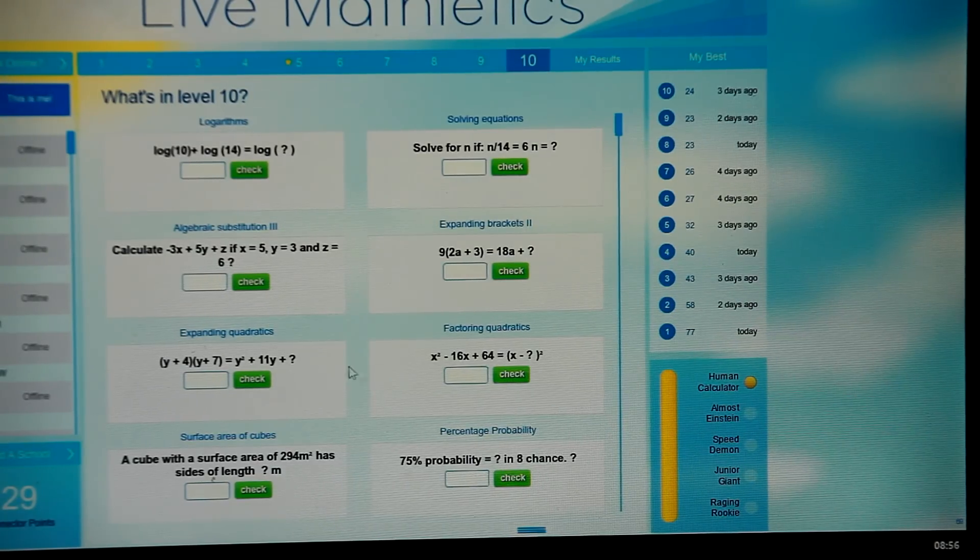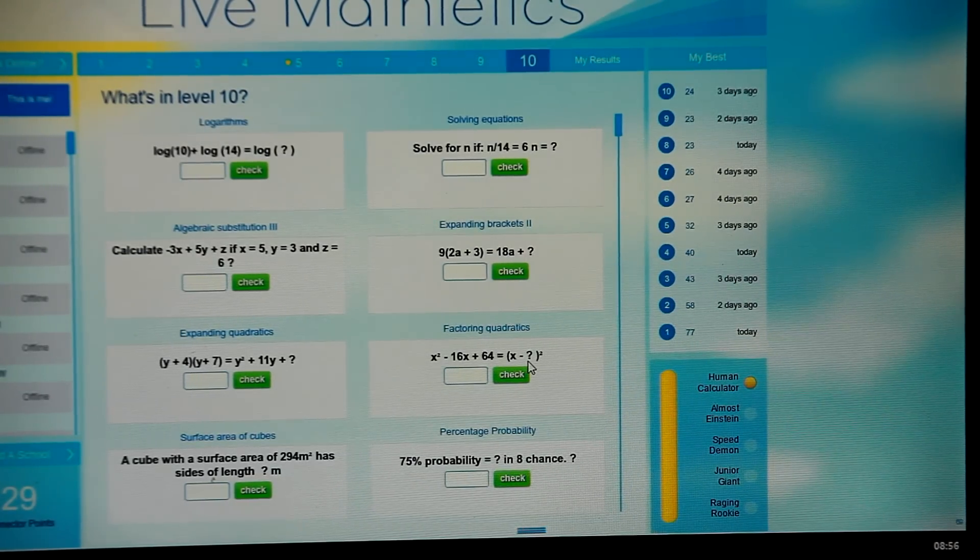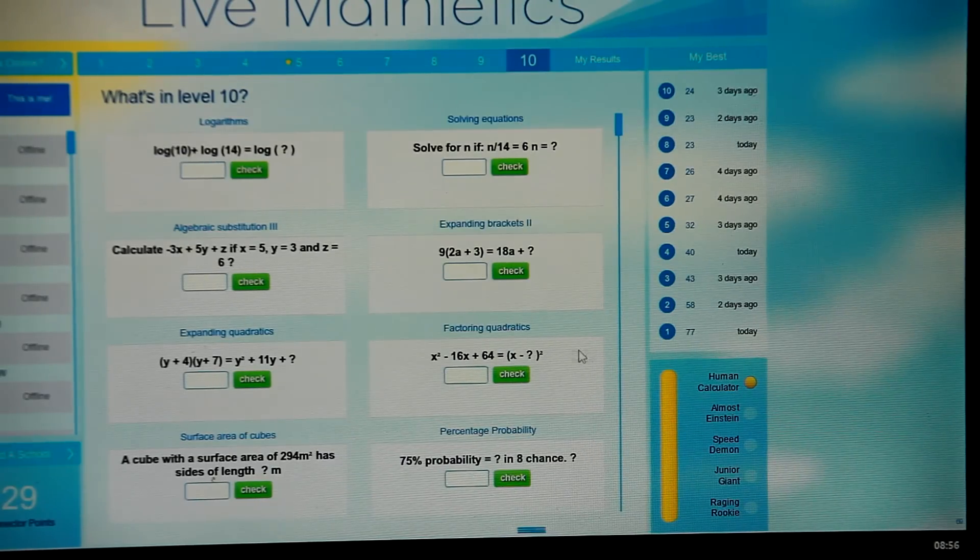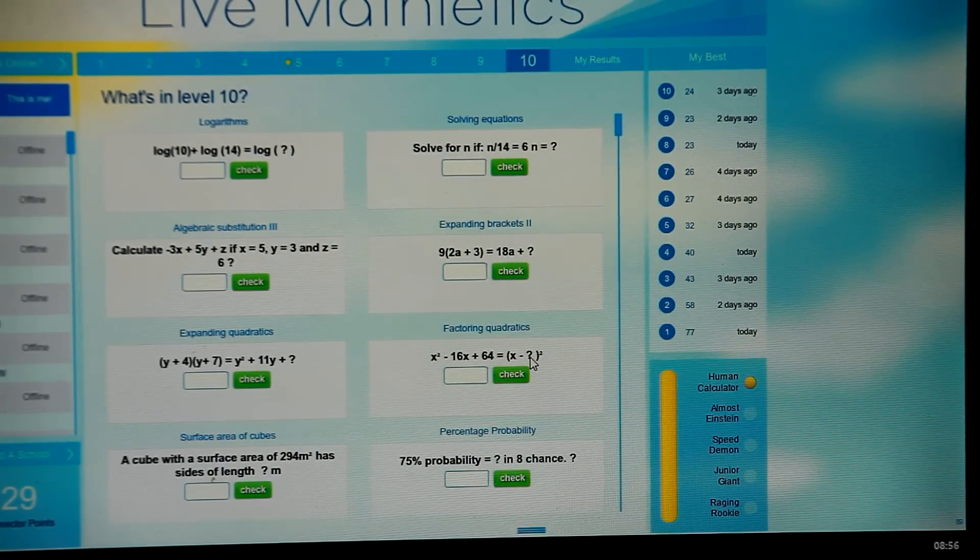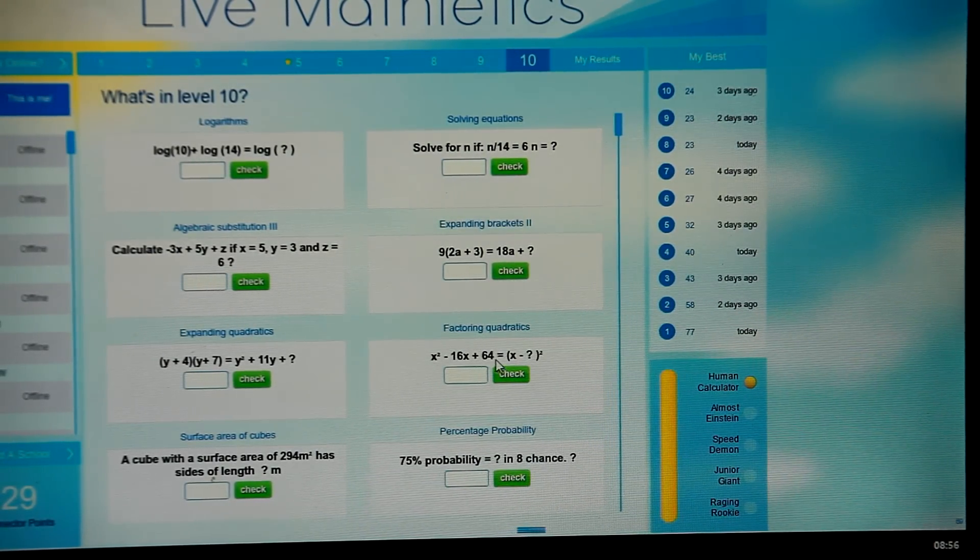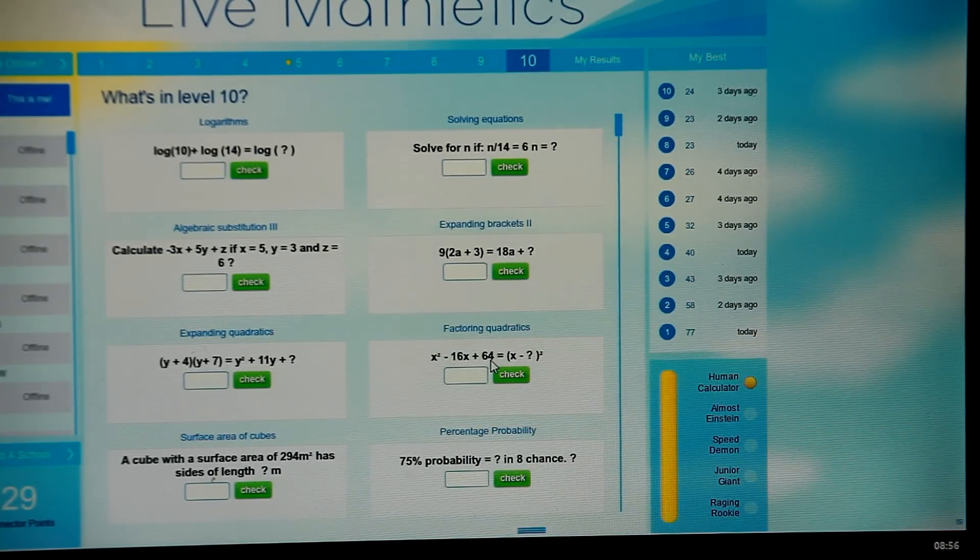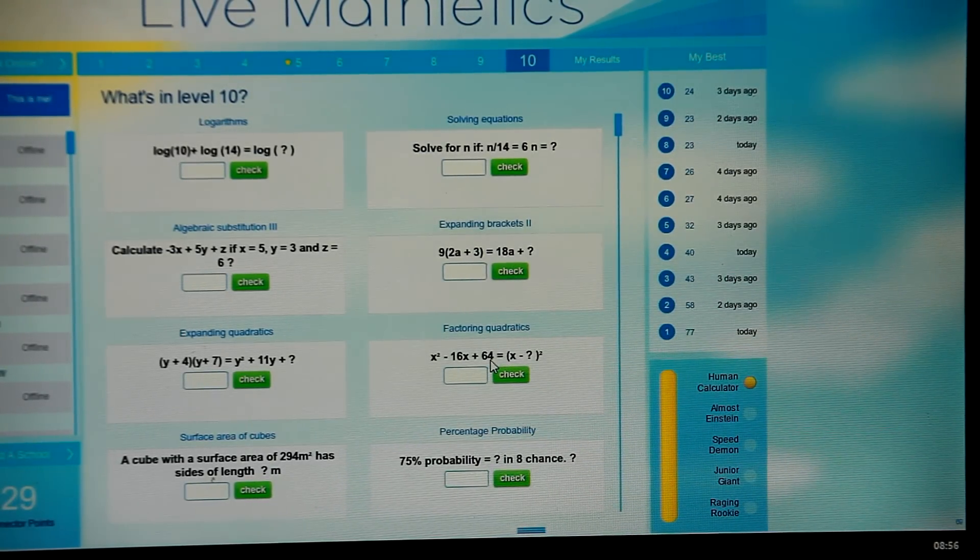When it's squared, you've just got to imagine this as being x minus question mark in brackets multiplied by x minus question mark in brackets. So again we're looking at the lasts, and so the question mark squared will give you the 64.